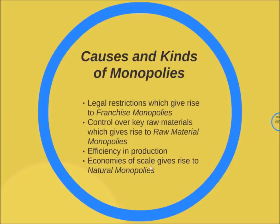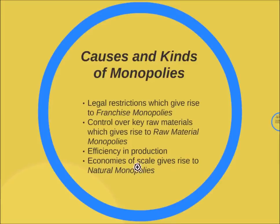Monopolies also occur due to economies of scale, and this gives rise to natural monopolies. When the cost related to a particular production process is so high that it is not possible for a single firm to enter, and if a firm tries to decrease that cost by increasing its scale — that is, accruing the benefits of economies of scale — monopolies are formed. If some other firm wants to enter this type of business to get the benefits, the main firm can cut down prices to kill the competition. Such monopolies formed due to economies of scale are known as natural monopolies.